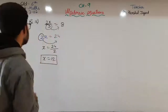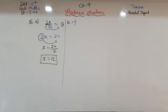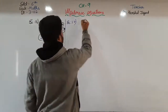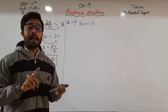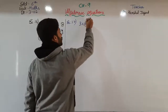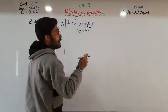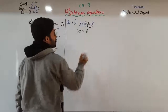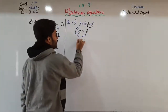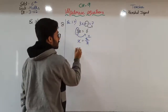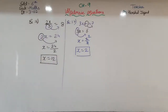Moving towards example number 17: 3x plus 1 is equal to 7. We have to use a combination of addition and multiplication. Here, 1 is in addition; when it moves to that side it becomes subtraction, so 3x is equal to 7 minus 1, which is 6. Then 3 is in multiplication; when it moves it becomes division, so x is equal to 6 upon 3, which is 2. x equals 2.